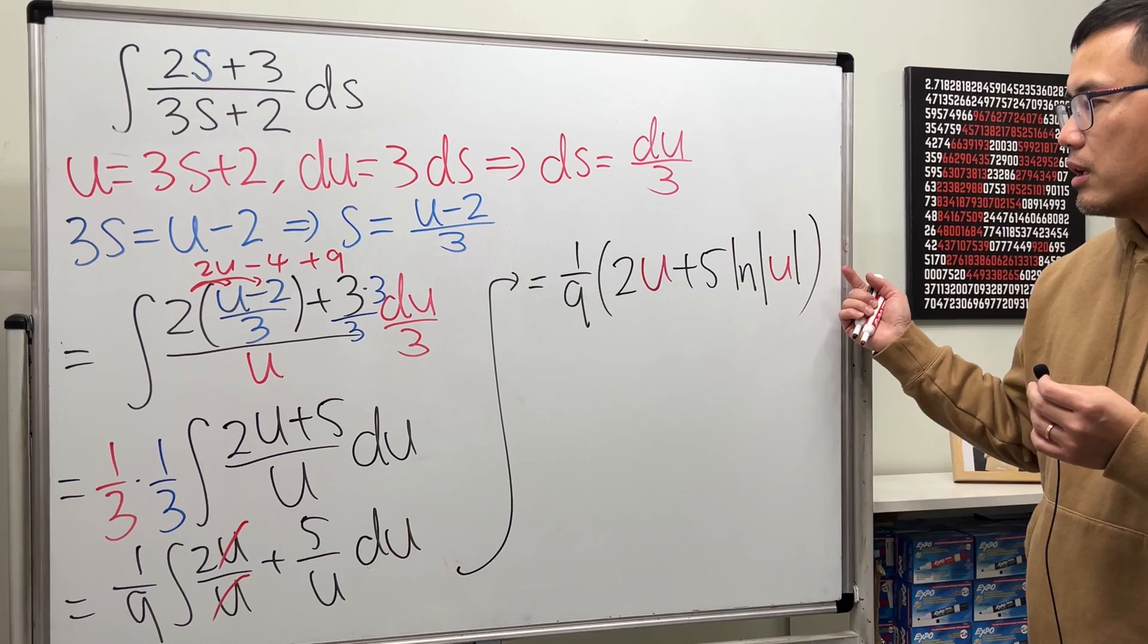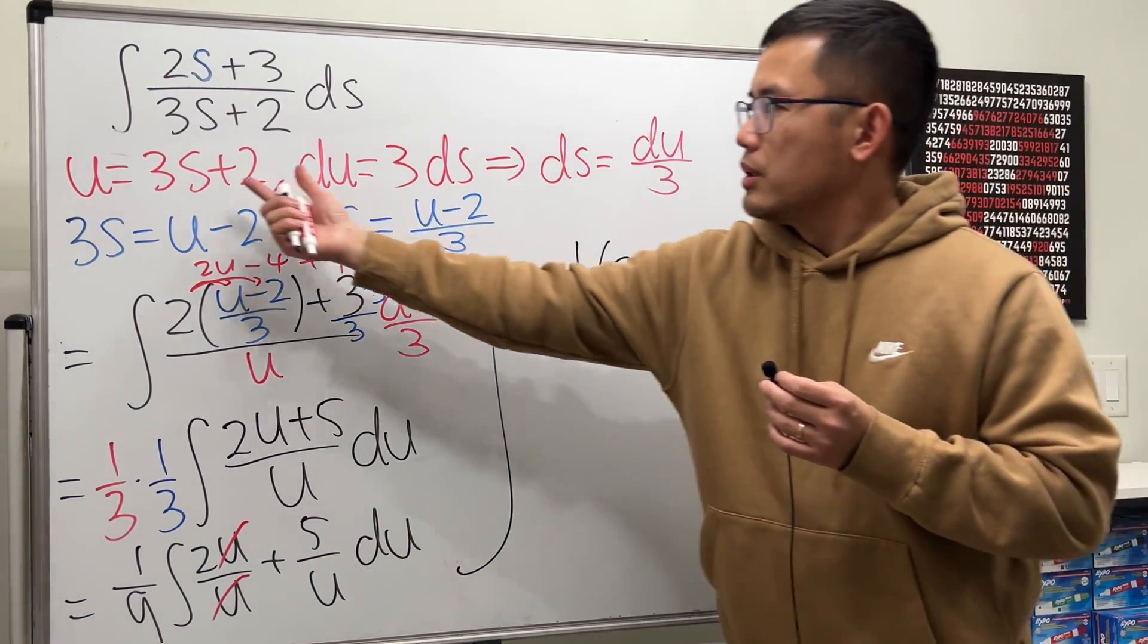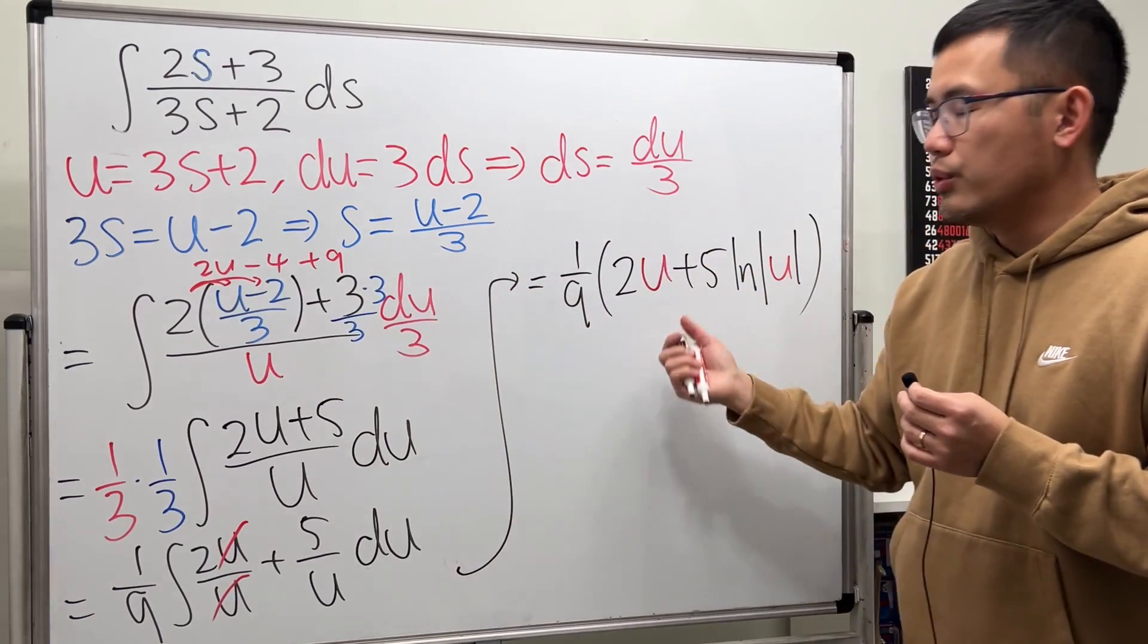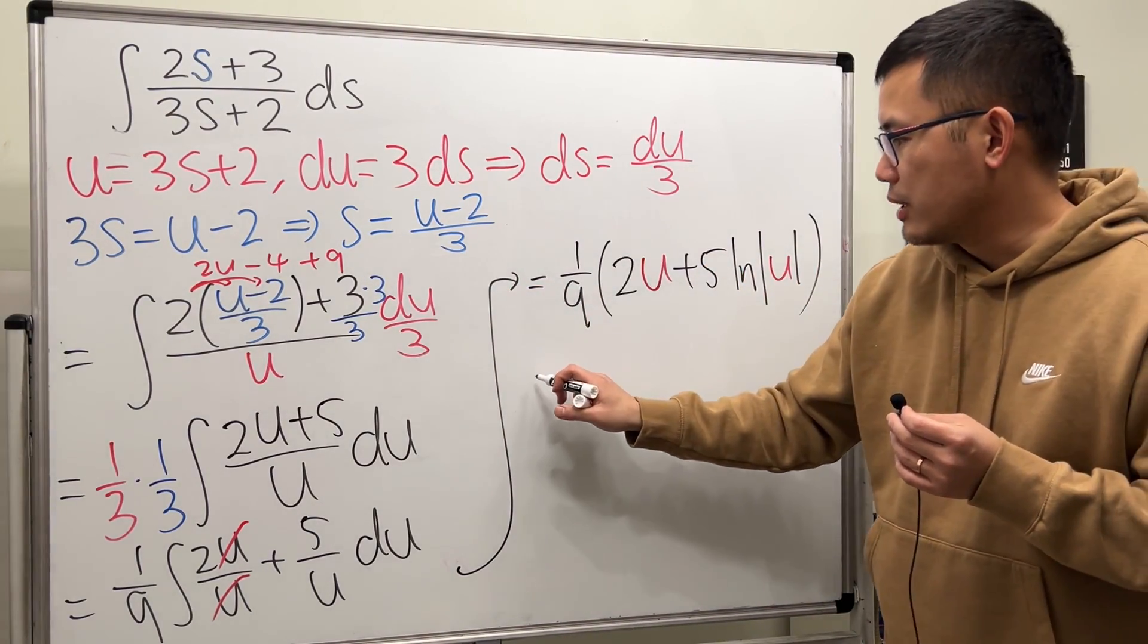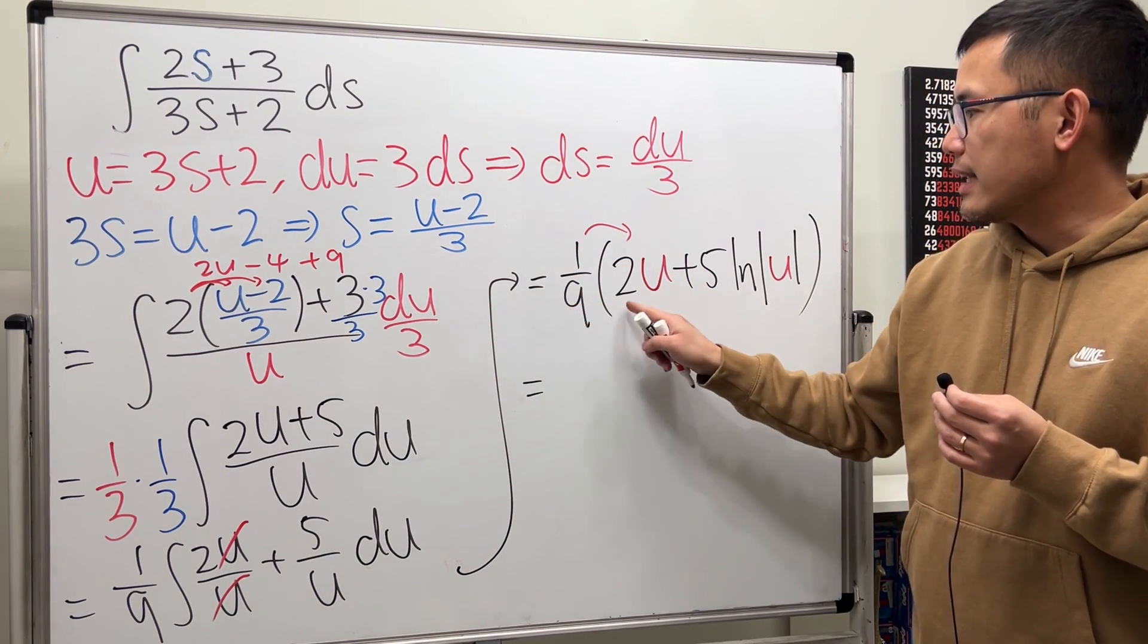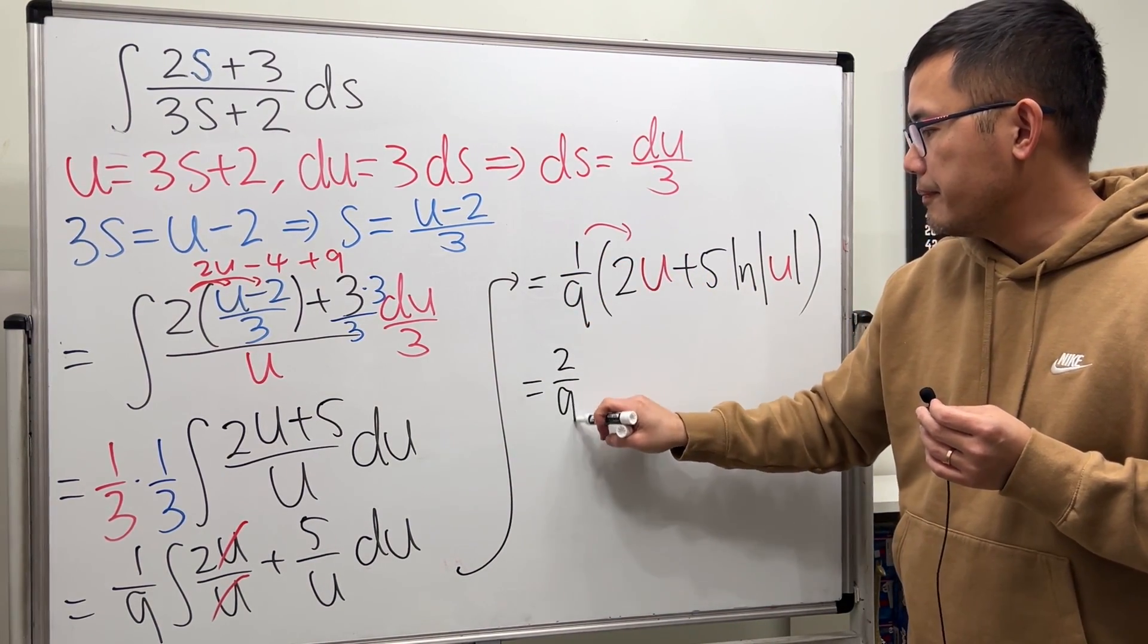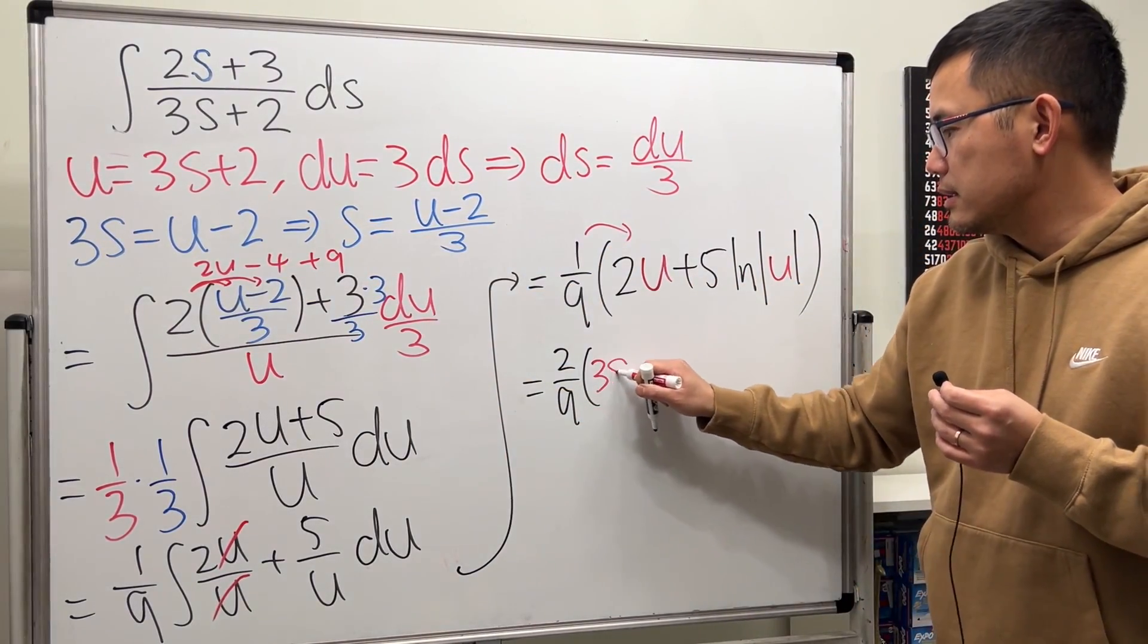And then you can put down plus c here. Or you can just plug in the 3s plus 2 for the u and then put on the plus c at the very end. That's usually how I like to do it. So I will do that too. So of course, let's distribute this. 1 over 9 times 2 is 2 over 9. And the u is that. So we have 3s plus 2.